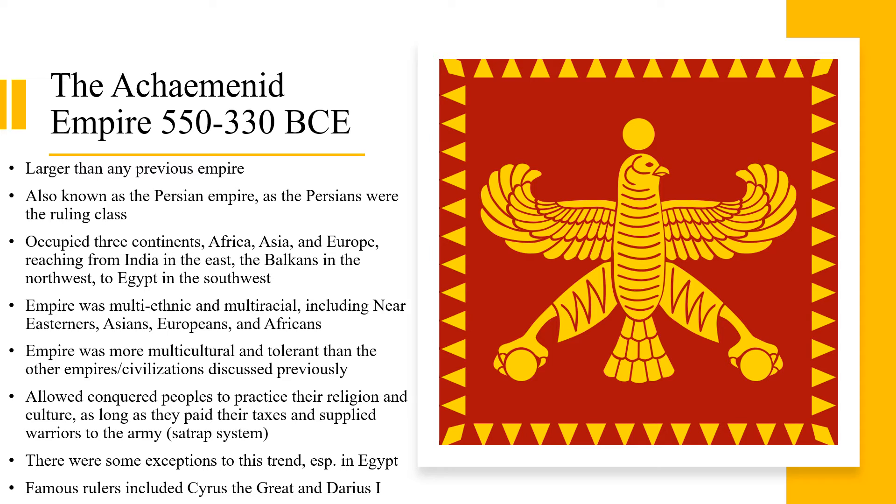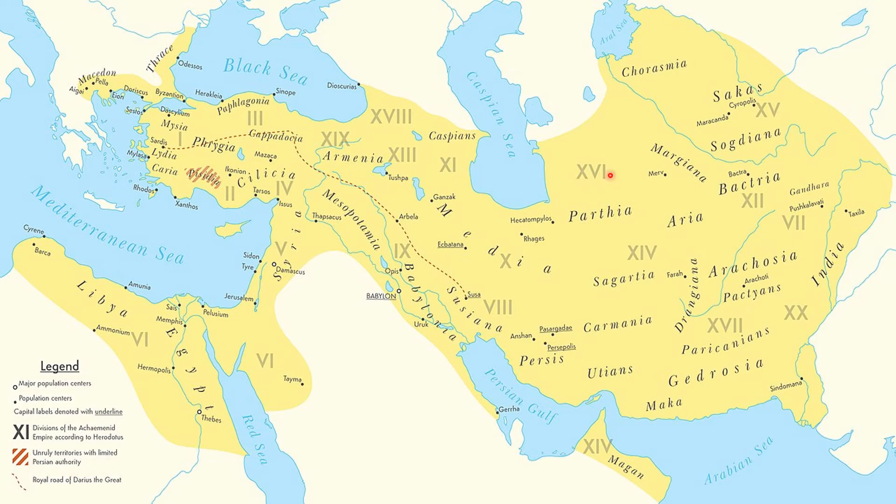Here is the Achaemenid Empire at its greatest extent, which it reached under the rule of Darius I. As you can see, it spreads as far east as India and into Europe north of Greece. It also extends south down through Egypt and Libya and North Africa, and it occupies Mesopotamia and the territories of the old Assyrian and Babylonian empires, as well as the Phoenician and Hebrew civilizations.